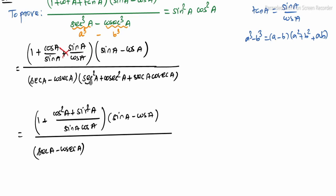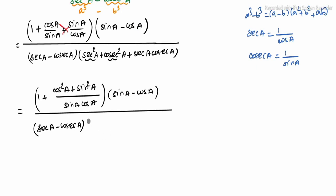Now apply the reciprocal identities: sec A equals 1 over cos A, and cosec A equals 1 over sin A. So the denominator second factor becomes: 1 over cos²A plus 1 over sin²A plus 1 over (cos A · sin A).